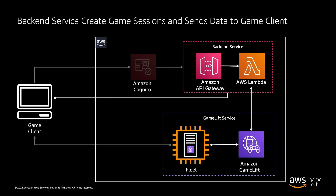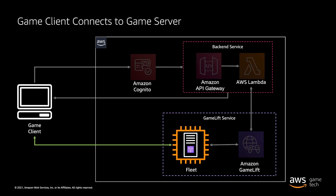The Amazon GameLift service will find an available server that is ready to start a game and then send the connection details for that server back through the API. Then the game client will start a game session with that IP address and port for the available server.